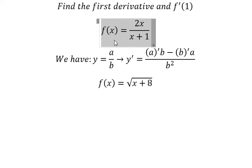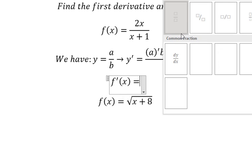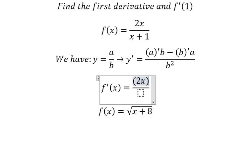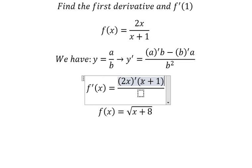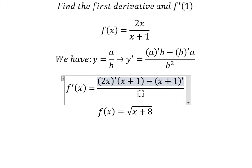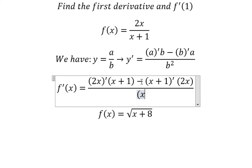So we can apply this formula here. We will have the first derivative of 2s multiplied by (s plus 1), minus first derivative of (s plus 1) multiplied by 2s, all over (s plus 1) to the power of 2.